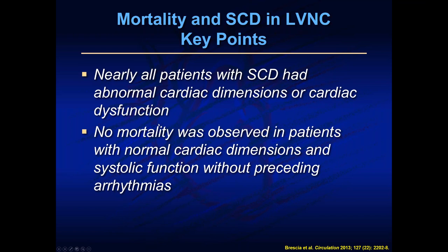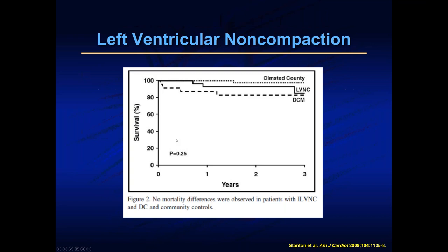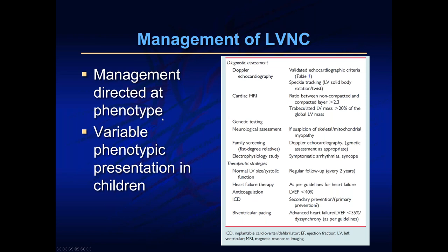Nearly all patients with sudden cardiac death had abnormal cardiac dimensions or dysfunction. There were no mortalities observed in patients with normal cardiac dimensions and normal heart squeeze without any preceding arrhythmias. So when patients come to clinic with normal heart squeeze and no arrhythmias, we typically do not restrict them from competitive sports. Adult data similarly show patients who preserve cardiac function have outcomes very similar to the general population, whereas those with heart squeeze abnormalities have much lower survival.